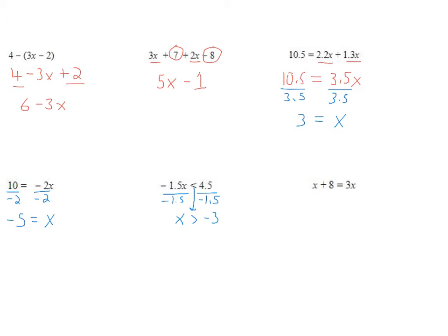Last but not least, I have variables on both sides of the equal sign and I want to get them all on the same side. The trick is to undo the smaller of the two — here that's the invisible 1x. So I subtract 1x from both sides. 1x minus 1x is 0, goes away. I'm left with 8 equals 3x minus x, which is 2x. That's a simple one-step equation: divide by 2 on both sides, and we get x equal to 4.